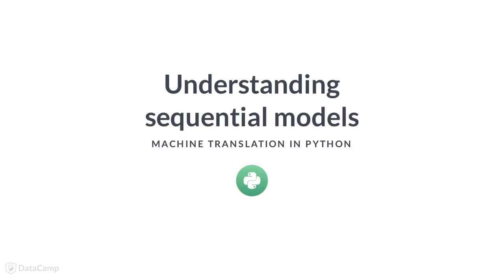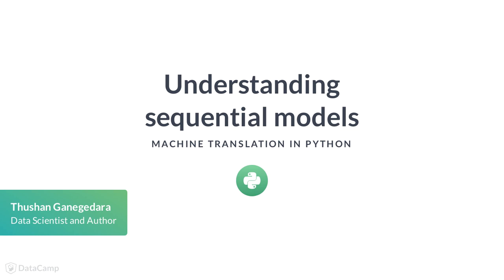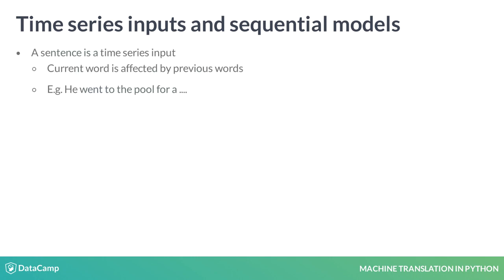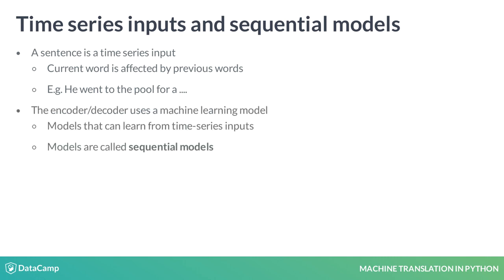Here, you will learn about the machine learning model used to implement the encoder and the decoder of the machine translator. A sentence is a time series input, which means that every word in the sentence is affected by previous words. The encoder and the decoder use a machine learning model that can learn from time series or sequential inputs like sentences. The machine learning model is called a sequential model.